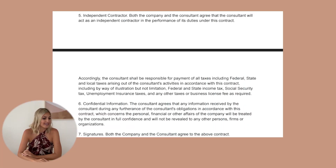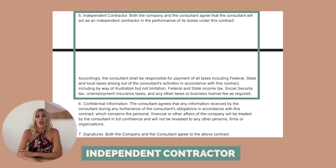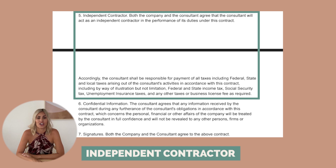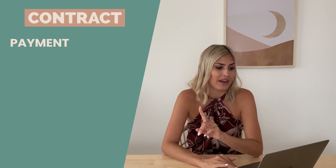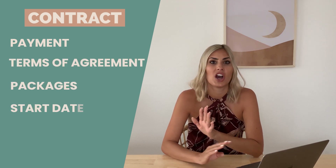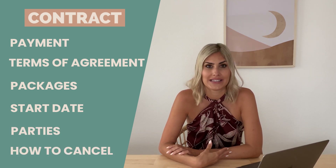The last part is stating that you are an independent contractor: you are paying your own taxes and your own government obligations depending on your country, and you are a completely separate entity from your client — you are not their employee. Some countries actually require that to be stated when hiring an independent contractor, for the safety of both parties. So the essentials you want in your contract are: payment information, terms of agreement, your packages, start date, who the parties are, and how to cancel the contract.